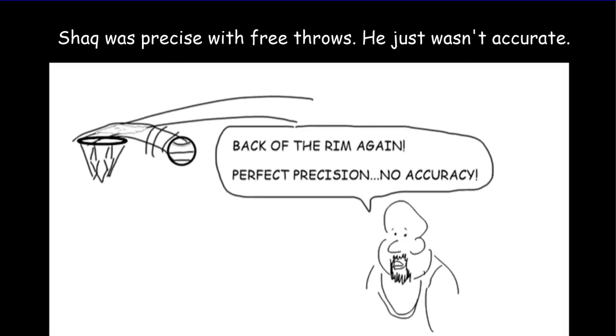I like to think that Shaq O'Neill was a very precise free throw shooter. He just wasn't very accurate. So he'd put up all kinds of shots and they'd always hit the back of the rim in the same spot. He had no arc on his shot and they'd always hit the back of the rim and then they'd bounce back out again. So he was precise because he always hit the same spot. He just wasn't accurate. He wasn't getting any extra points for the free throws.